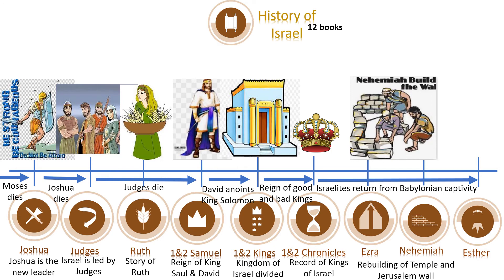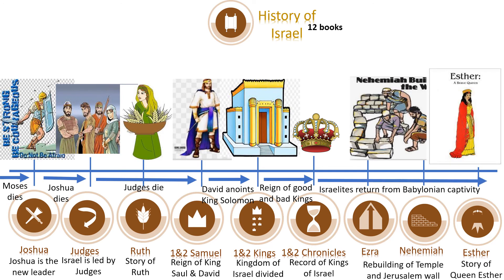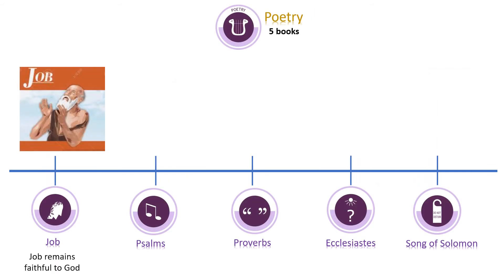After the kingdom gets divided, the people of Israel are taken as captives to Babylon for 70 years. Their city, temple, and the Jerusalem wall were destroyed. They returned to Jerusalem after captivity, and Ezra and Nehemiah urged them to rebuild the temple and the wall. The book of Esther was also written during the time of restoration and rebuilding of Israel, and talks about the faithfulness of Queen Esther towards her people and God.